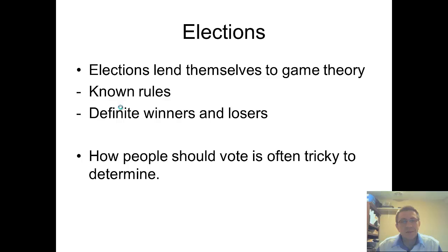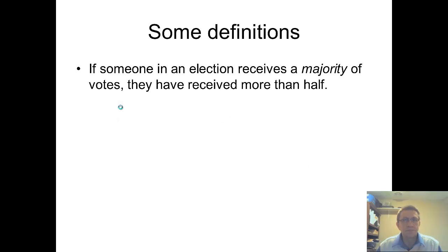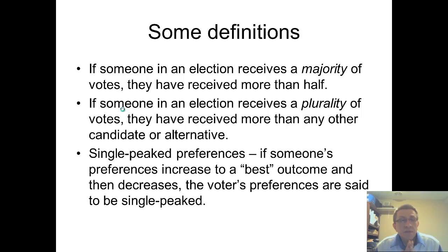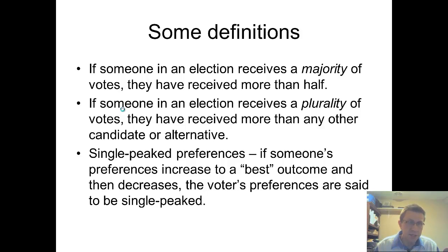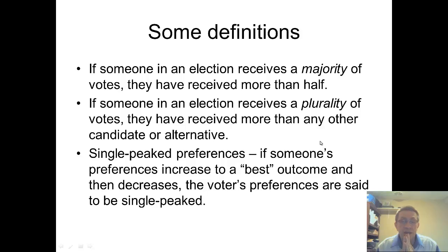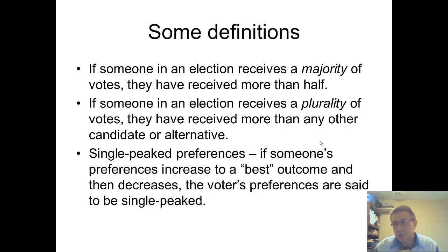The idea of determining how people should vote can often be tricky. Starting with a few definitions: if someone in an election receives a majority of votes, they've received more than half — more than 50%. That is not the same as getting 40% in a three-way race while the other two get 30% each. That is a plurality. A plurality means receiving more votes than any other candidate, but it can be less than 50%. In three-person elections, the winner often receives fewer than 50% of the vote.